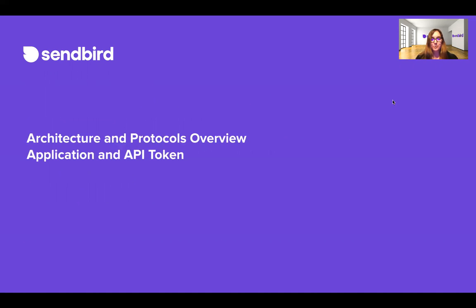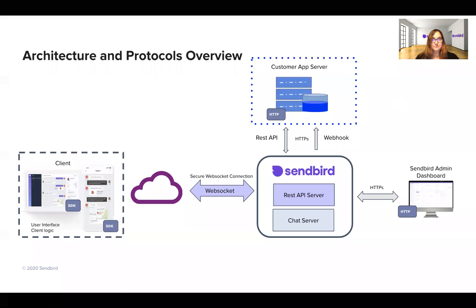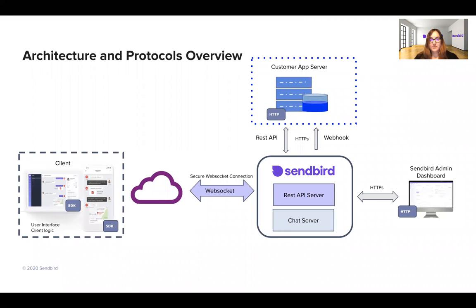Let's start with architecture and protocols overview and the application and API tokens. In Sendbird, there's a RESTful API service on the backend — we have an API server and a chat server. The client side of your application connects to Sendbird through a WebSocket connection via the SDK. The backend side connects through RESTful API calls, and you can also listen to webhook events from Sendbird.